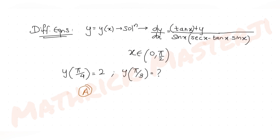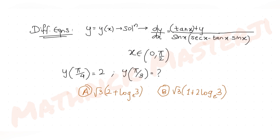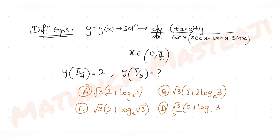The answer choices are: (A) √3/2 + ln 3, (B) √3 · (1 + 2 ln 3), (C) √3 · (2 + ln √3), and (D) (√3/2)(2 + ln 3).